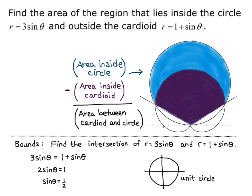Now we think back to our unit circle and figure out where sine theta equals one half. In the first quadrant we have the point square root of 3 over 2 and one half, giving theta equals pi over 6. In the second quadrant we have the point negative square root of 3 over 2 and one half, giving the angle 5 pi over 6. Those are the bounds for our area integral.